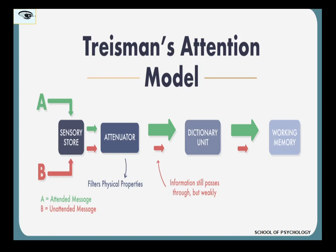The stimuli that were literally ignored and left out, as per the filter attenuation theory, will not be completely blocked. Instead, they will be processed weakly. Their strength will get reduced because of the attenuator, and some of them might manage to actually pass through the selective filter. This theory says the filter is going to attenuate — which means weaken — the strength of the stimuli.